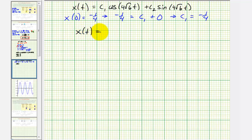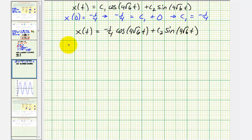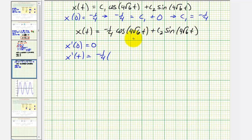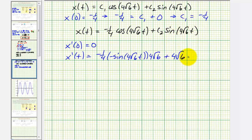So x of t equals negative one-fourth cosine(4 square root 6 · t) plus c sub 2 sine(4 square root 6 · t). Now we use x prime of zero equals zero, so we find the first derivative. x prime of t equals negative one-fourth times negative sine(4 square root 6 · t) times 4 square root 6, plus c sub 2 times cosine(4 square root 6 · t) times 4 square root 6, which is 4 square root 6 · c sub 2 · cosine(4 square root 6 · t).